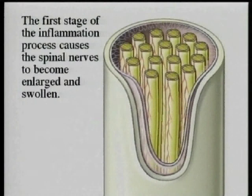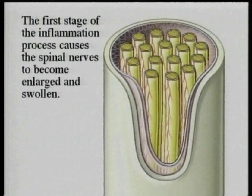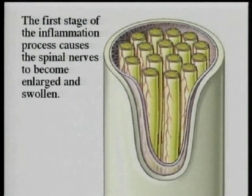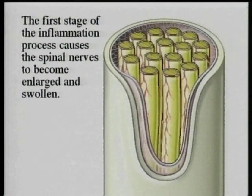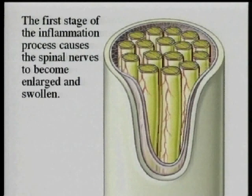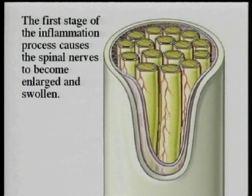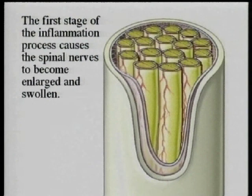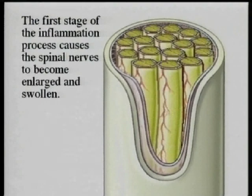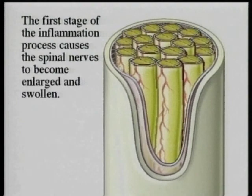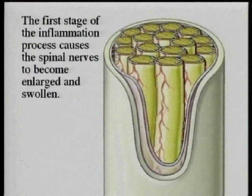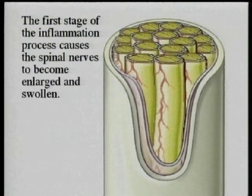The first stage of the inflammatory process causes the spinal nerves to become enlarged and swollen, as shown here. In addition to the swelling of the nerves, there is distension of the adjacent blood vessels, which become hyperemic. As the nerves swell, the subarachnoid space actually disappears, and very typically the spinal fluid is squeezed out from in between the spinal nerves.